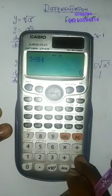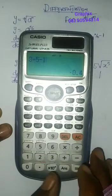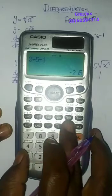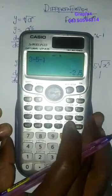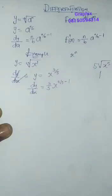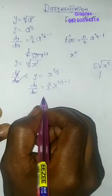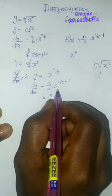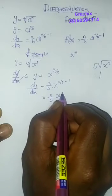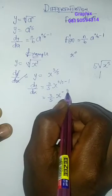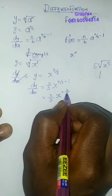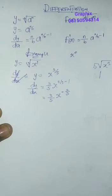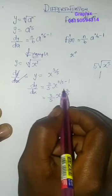So this will give me 3 over 5, we have x to the minus 2 over 5. Is that okay?